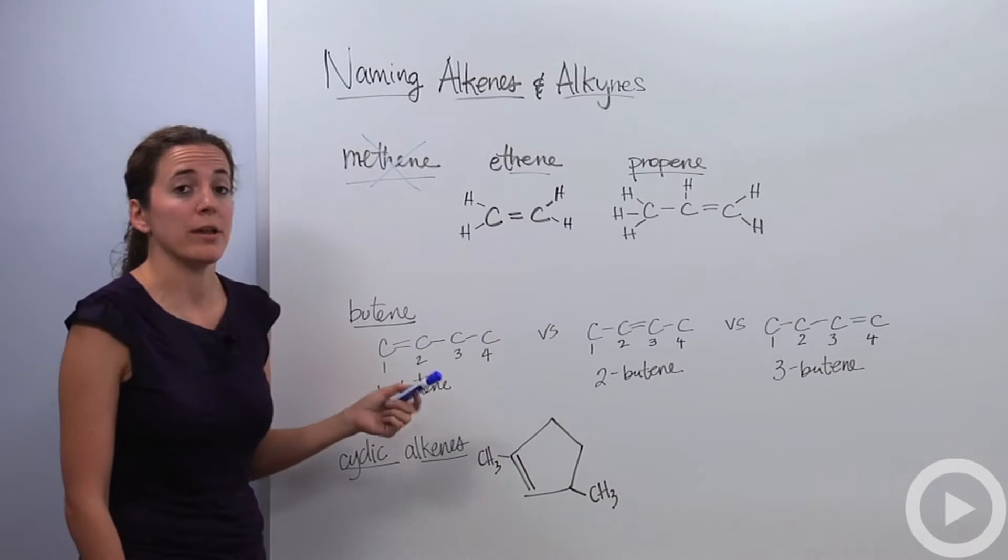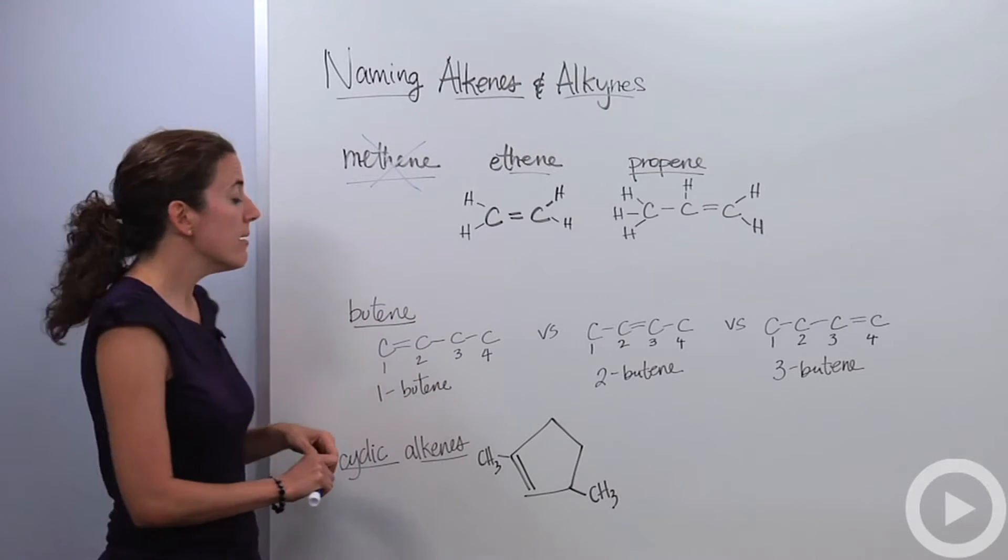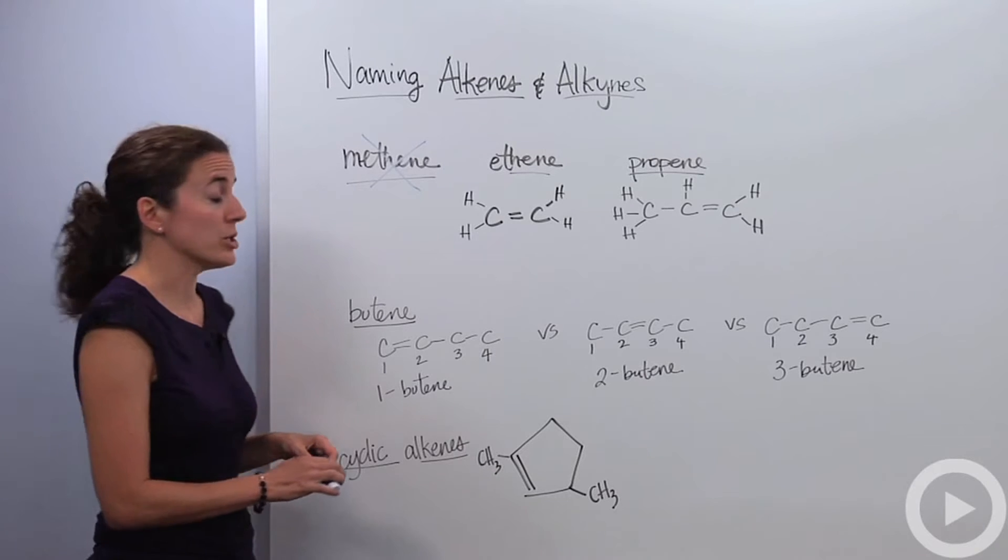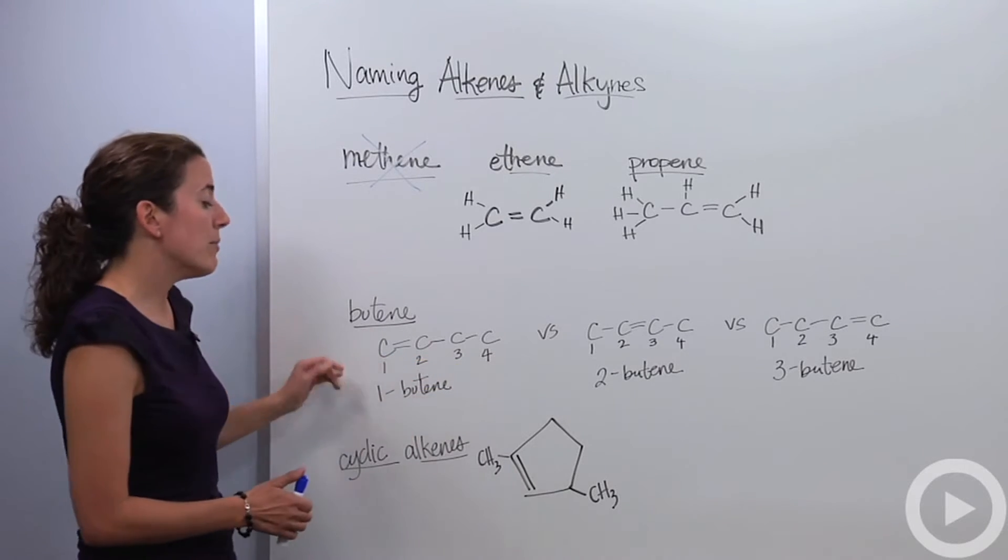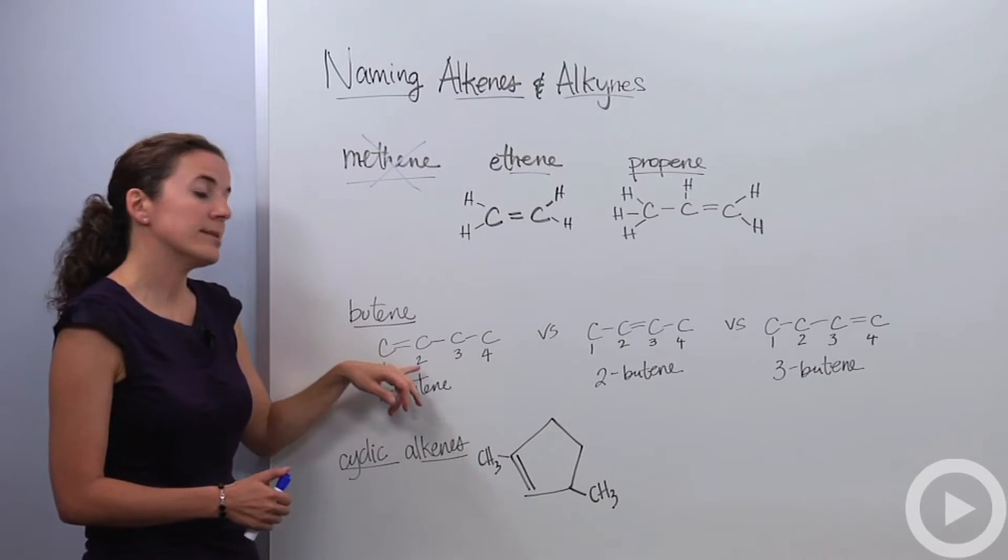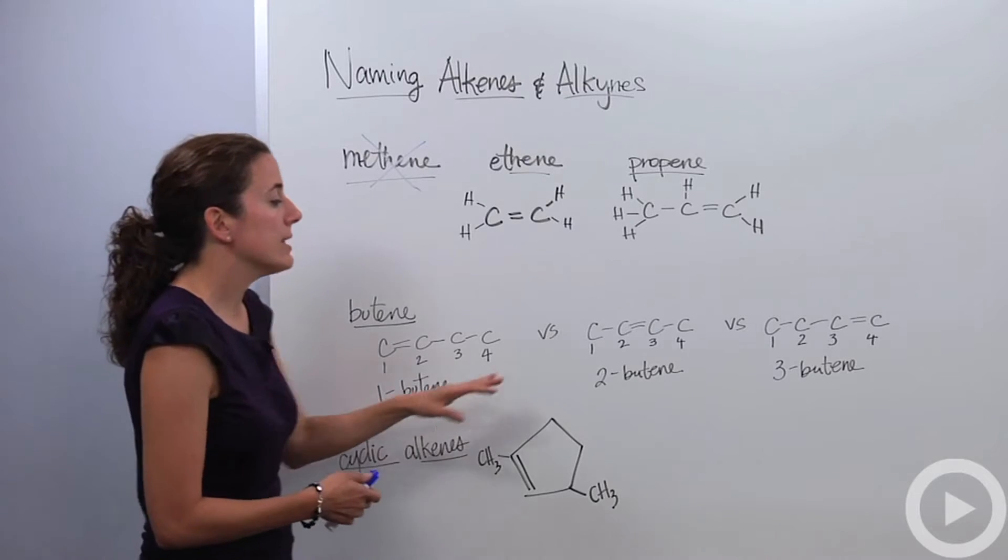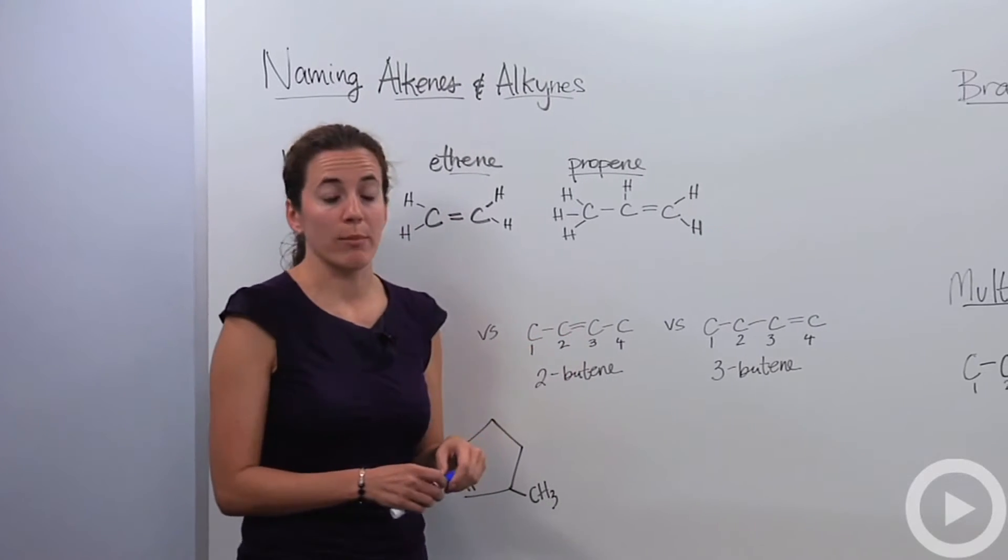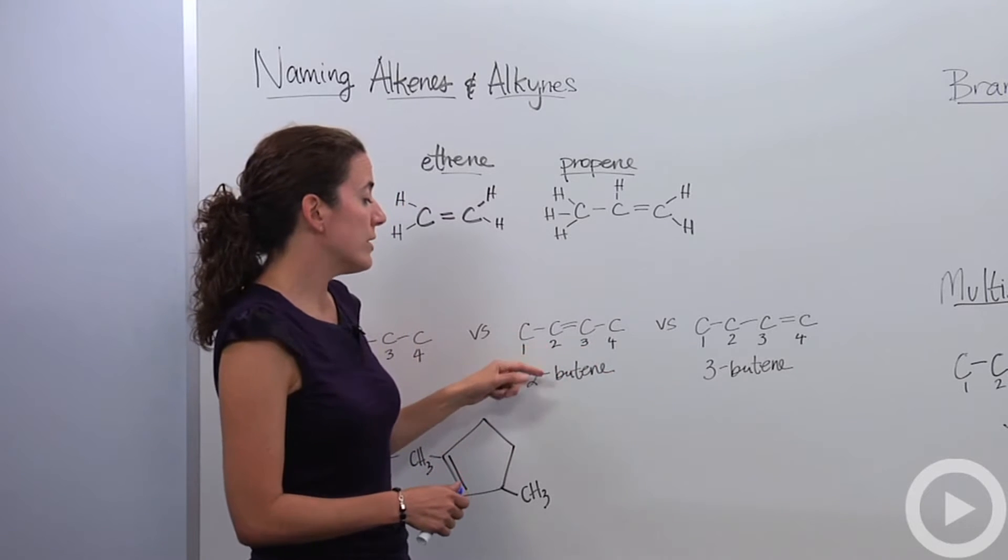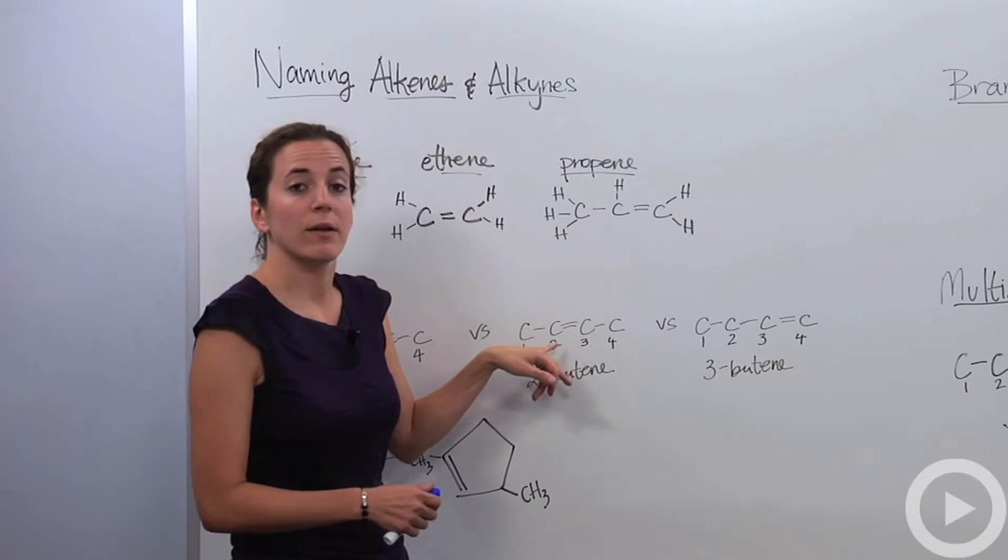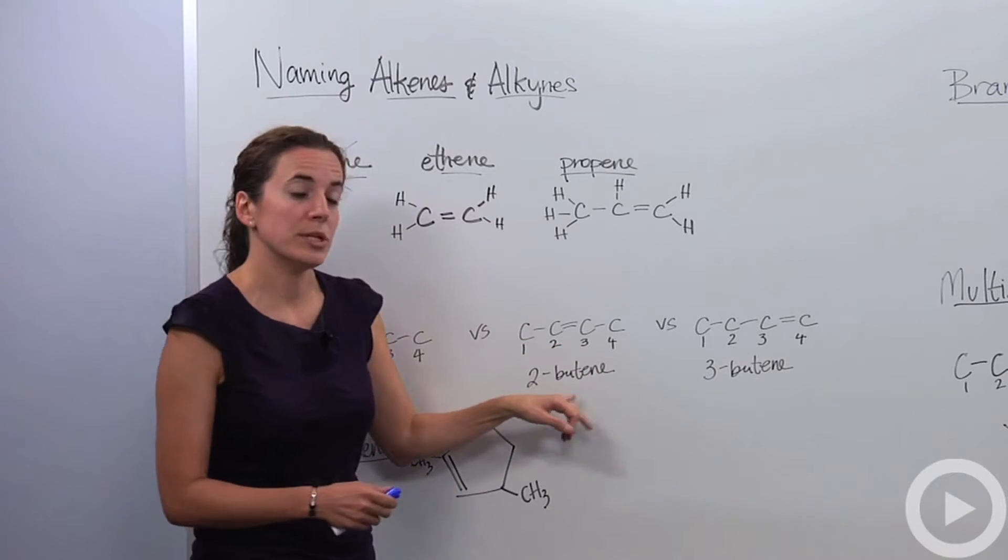But let's look at butene a little bit more in depth. So if we were to go back to our naming rules, we would have to number our parent carbon chain. So we're going to number our carbons one, two, three, four. And if we were to name this, we would say the double bond is between the first and second carbon, making it 1-butene. Okay, fair enough. Let's say it was between the middle two carbons. We again numbered it one, two, three, four. And we would call this 2-butene because that would tell us that the double bond is between the second and the third carbon.